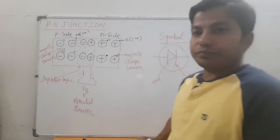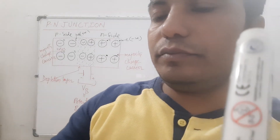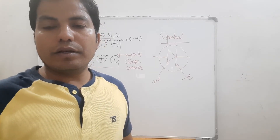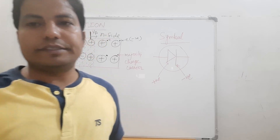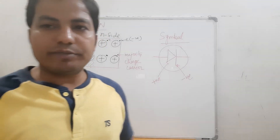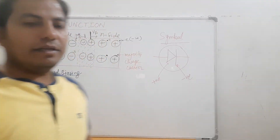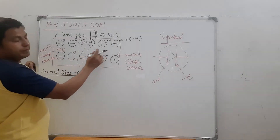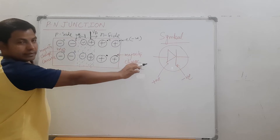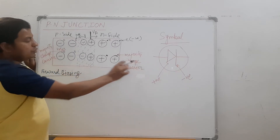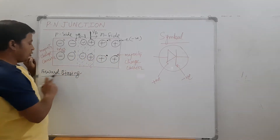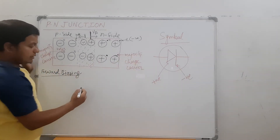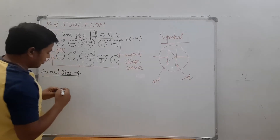Now we will study about forward biasing and reverse biasing of the PN junction. This is the structural diagram of the PN junction, and this is the symbol. While studying forward biasing, we will use the symbol.